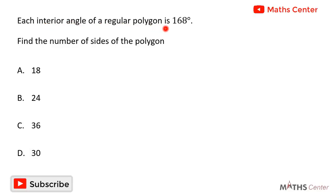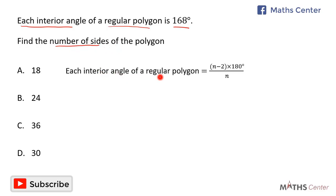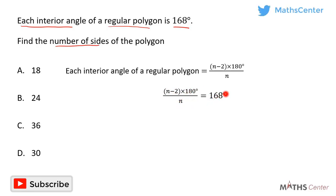Each interior angle of a regular polygon is 168 degrees. Find the number of sides of the polygon. This is a multiple choice question and so we will solve the question and after that pick the correct option. Each interior angle of a regular polygon is given by the formula: n minus 2 times 180 degrees, divided by n, where n is the number of sides. Since each interior angle is 168 degrees, we set n minus 2 times 180 divided by n equal to 168 degrees.